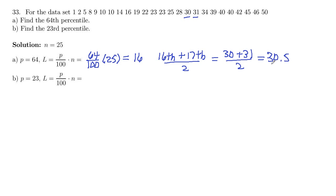So it's actually not a number in the list, and that sometimes happens. So 30.5 has 64% of the data below it.